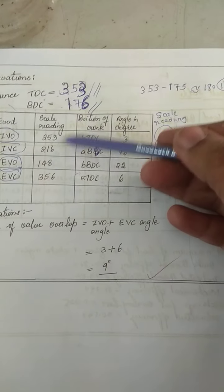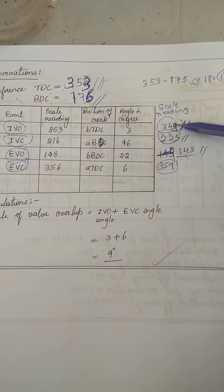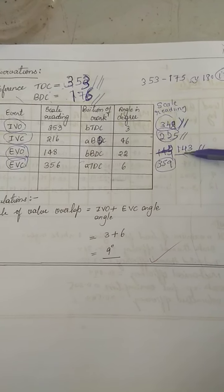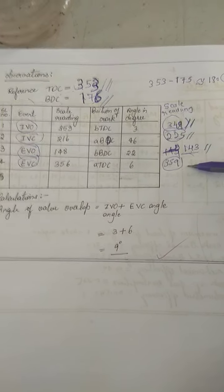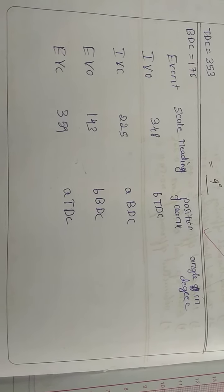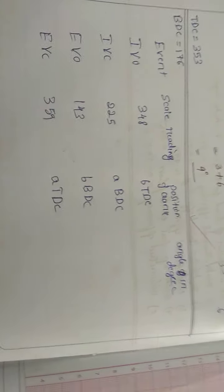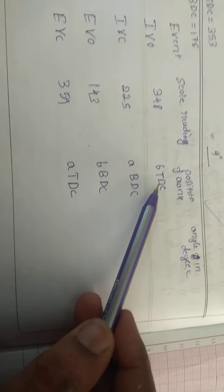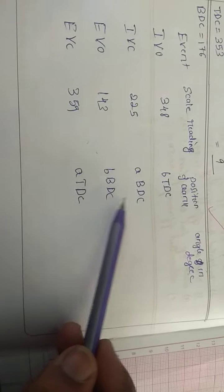We have noted the scale readings from this experiment: inlet valve opens at 348, inlet valve closes at 225, exhaust valve opens at 143, and exhaust valve closes at 359. Now we have redrawn the table with these readings. We need to find these angles in degrees with respect to TDC and BDC.